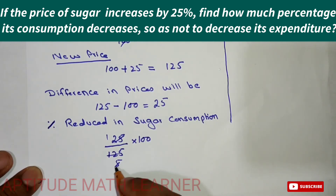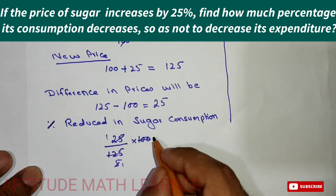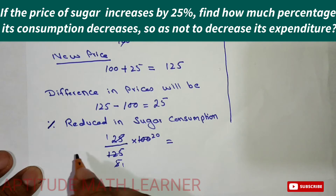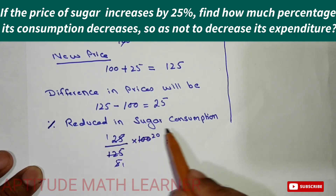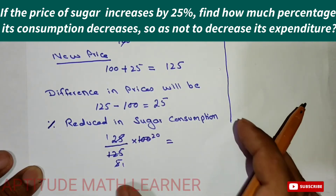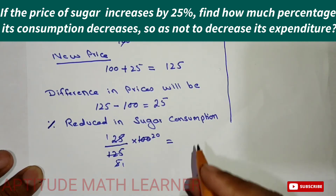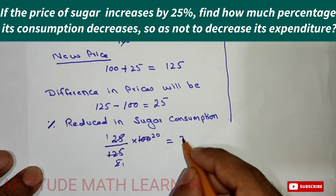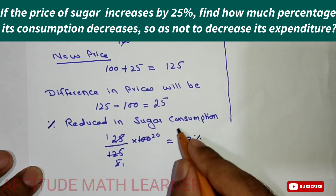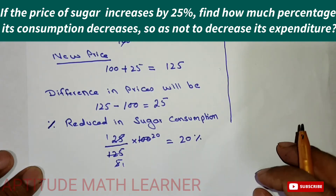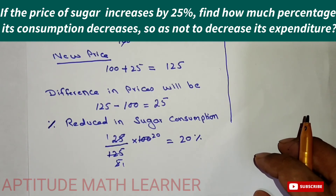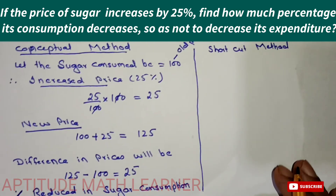Simplifying: 25 over 125 times 100 — 25 fives are 125, and 5 twenties are 100 — so the reduced percentage in sugar consumption is 20 percent. You have to consume 20 percent less sugar. I hope the conceptual method is completely understood.